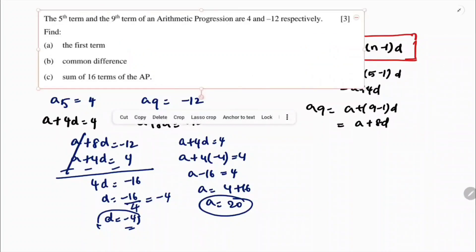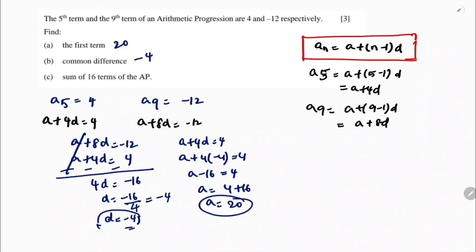Now they are asking sum of 16 terms. So sum of 16 terms, I will use the formula N by 2 into 2A plus N minus 1 into D.